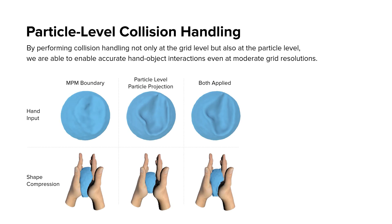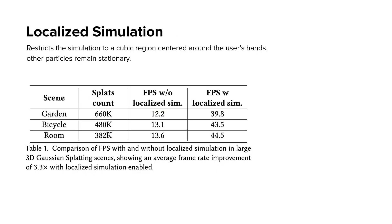We introduce the following technical contributions. By performing collision handling at both the grid and particle levels, we enable accurate hand-object interactions even at moderate grid resolutions. This approach provides clearer imprints, finer details, and realistic deformations while preserving precision. We restrict the simulation to a cubic region around the user's hands; other particles remain stationary. We tested with and without localized simulation in complex scenes, showing a 3.3-fold frame rate increase and significantly boosting performance.